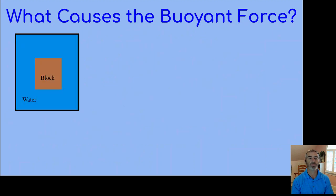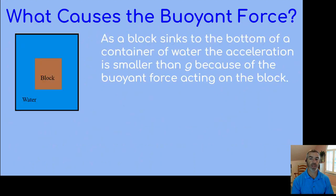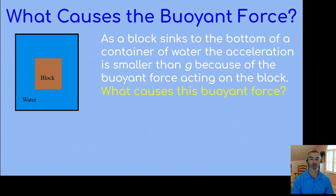If we have a block in the water and the block sinks to the bottom of the container, the water causes the acceleration to be smaller than g because of the buoyant force acting on the block. But what causes this buoyant force?